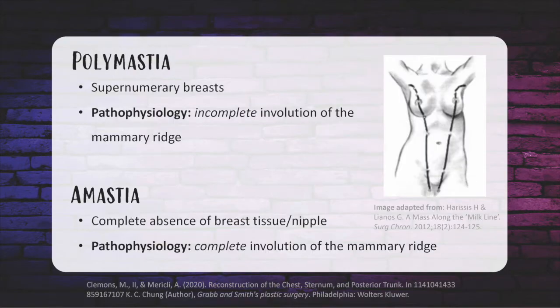Polymastia (accessory breast) and polythelia (accessory nipples) are both congenital anomalies referring to incomplete involution of the mammary ridge. Amastia is complete involution of the mammary ridge.